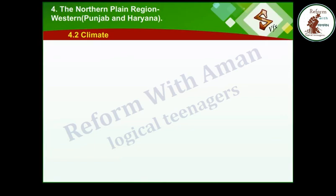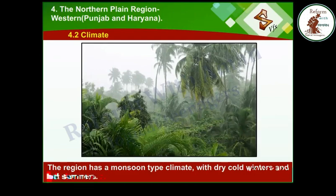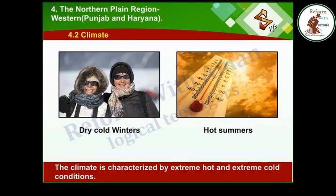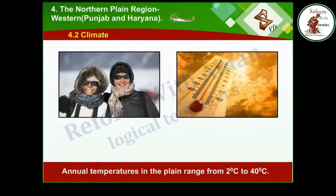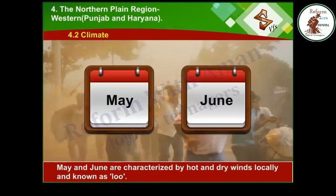4.2 Climate. The region has a monsoon-type climate with dry cold winters and hot summers. The climate is characterized by extreme hot and extreme cold conditions. Annual temperatures in the plain range from 2 degrees Celsius to 40 degrees Celsius. The hottest months are May and June.